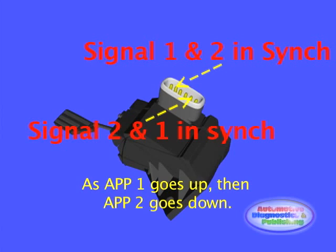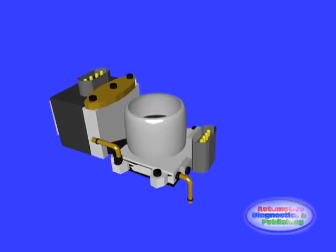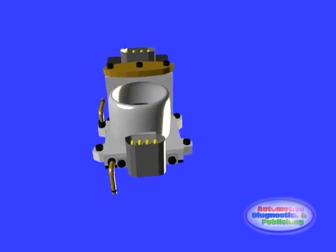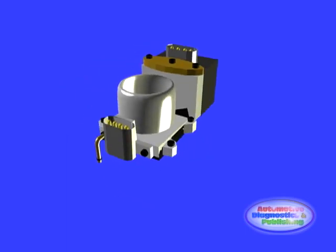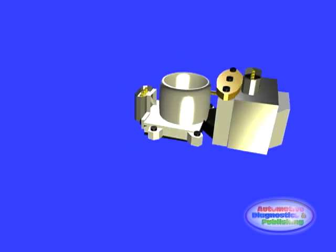Notice the correlation of all the signals to each other. If one of the potentiometer's signal outputs is off calibration, the ECM will set a fault code. If the APP sensor passes the test, disconnect the scope or multimeter from the two redundant potentiometers, then connect the second and third channels to the dual TPS at the throttle plates.